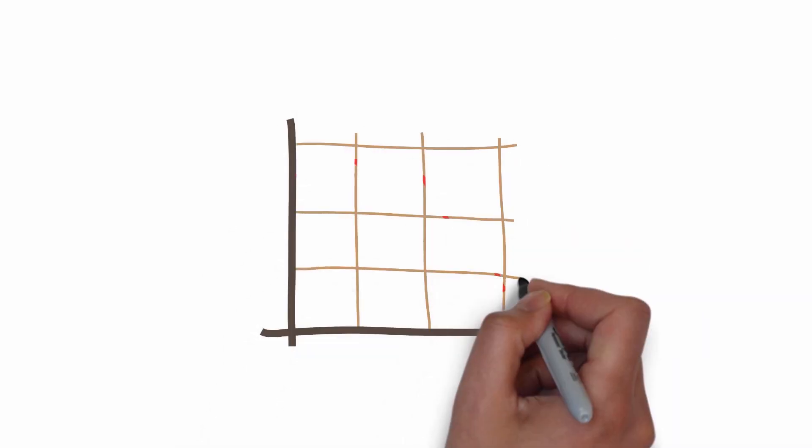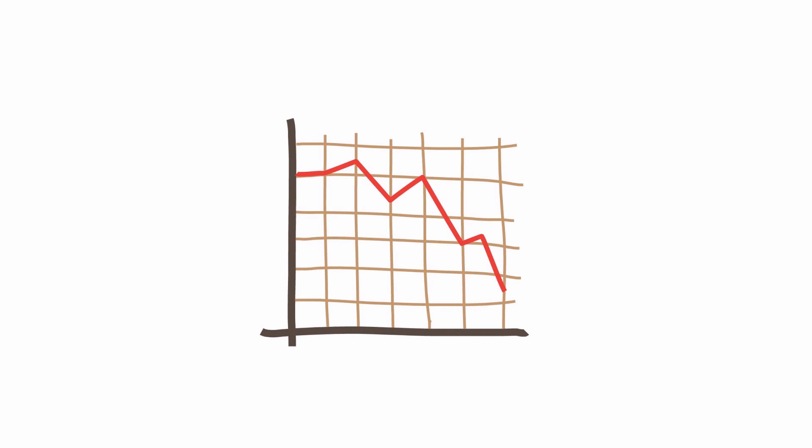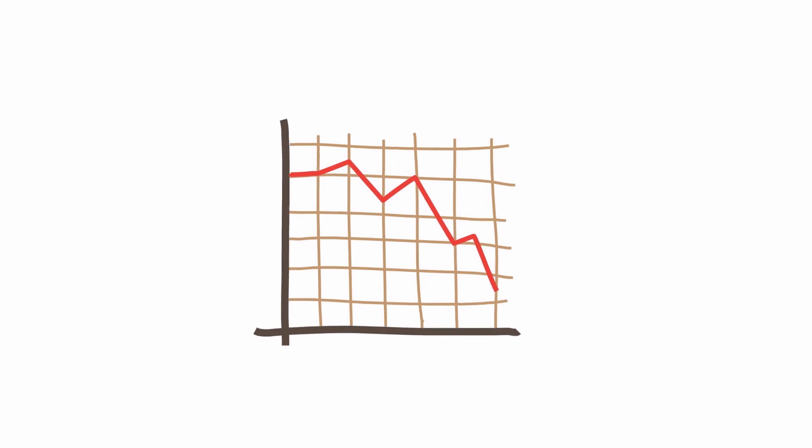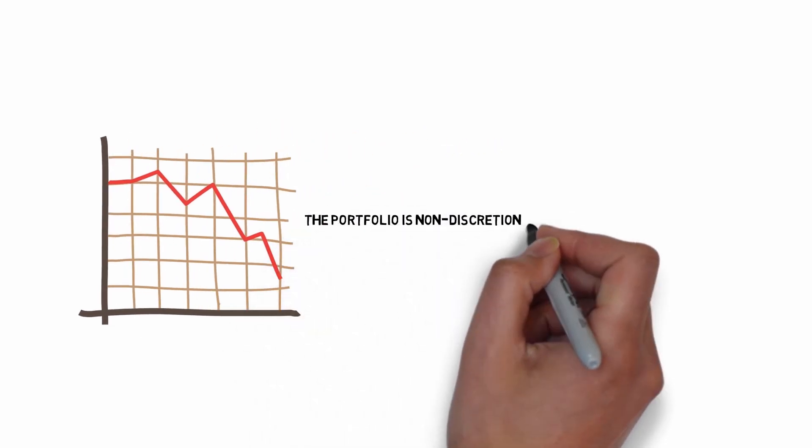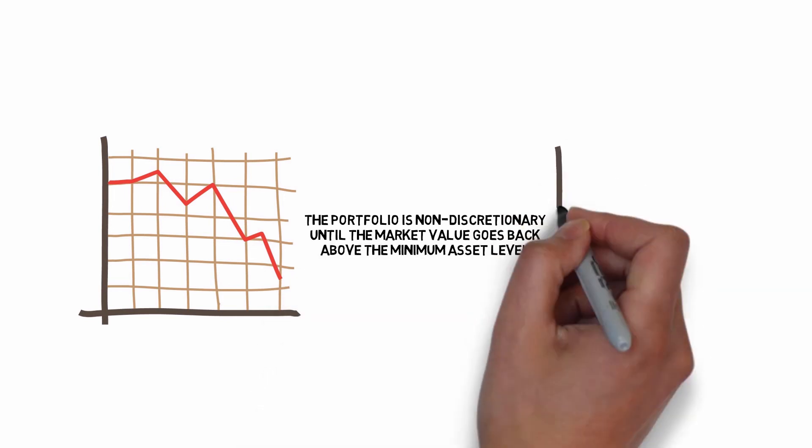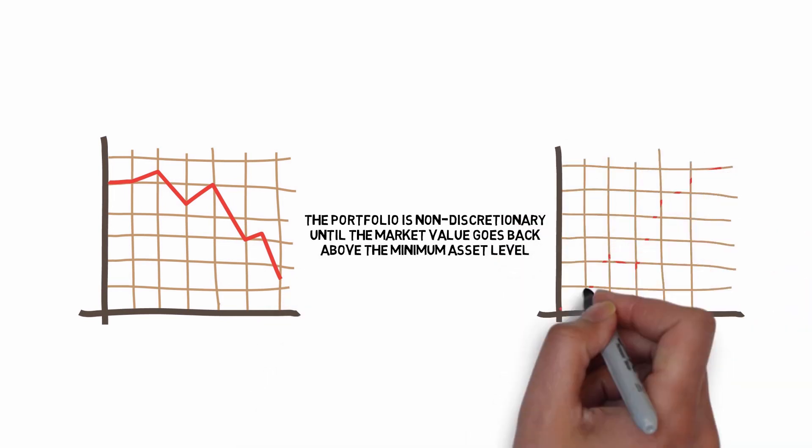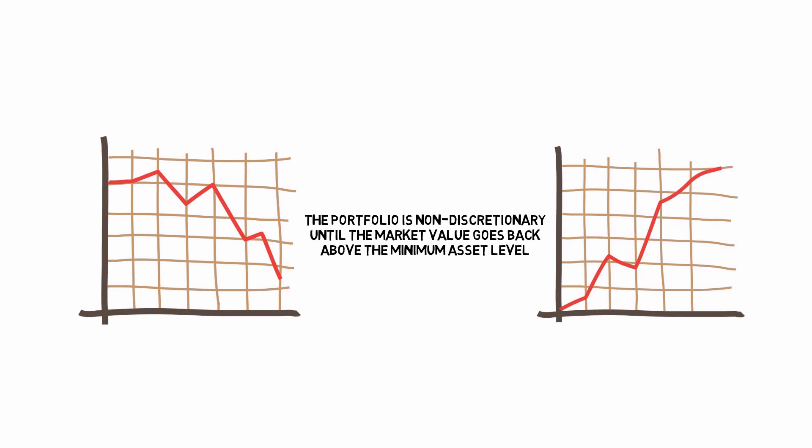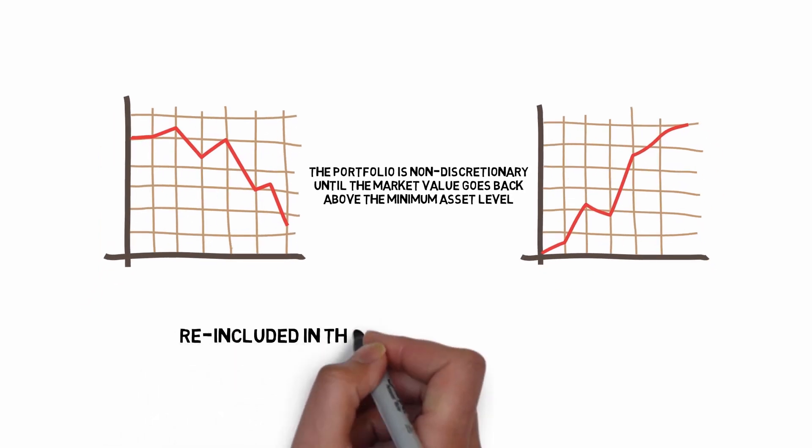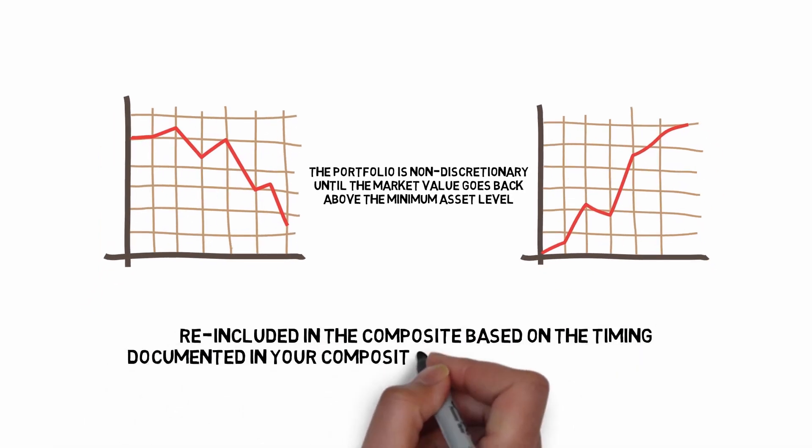Finally, the portfolio's market value drops below the composite's documented minimum asset level. The portfolio becomes non-discretionary until the market value goes back above the composite's minimum asset level, at which point the portfolio would be considered discretionary again and would be re-included in the composite based on the timing documented in your composite's minimum asset level policy.